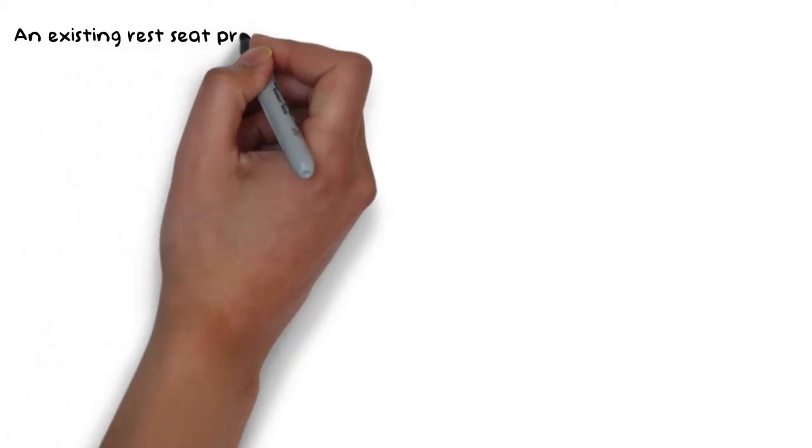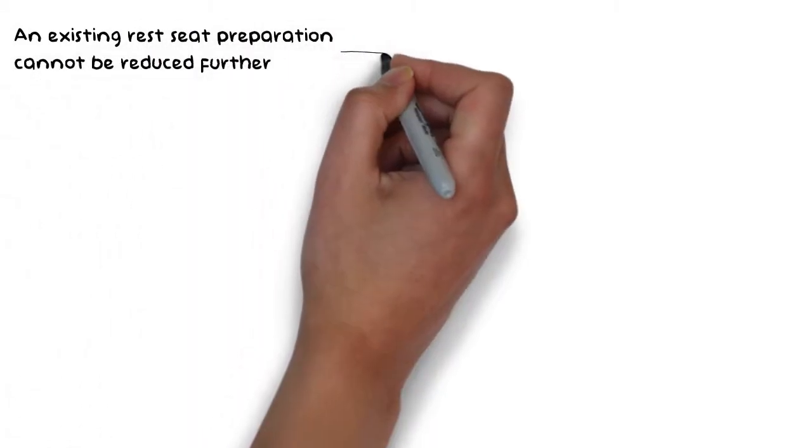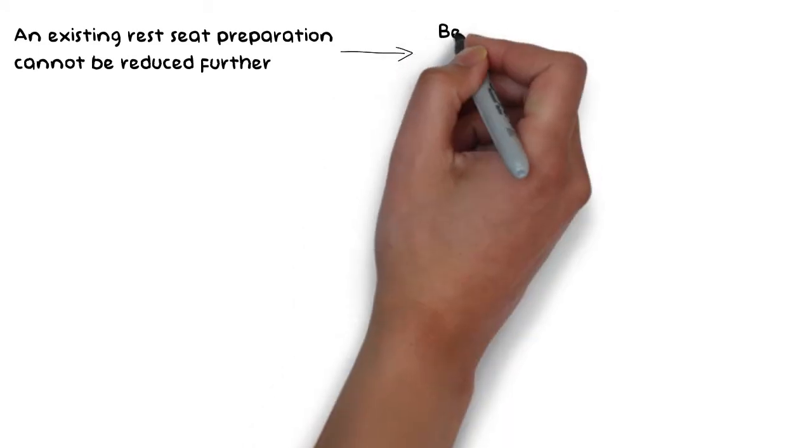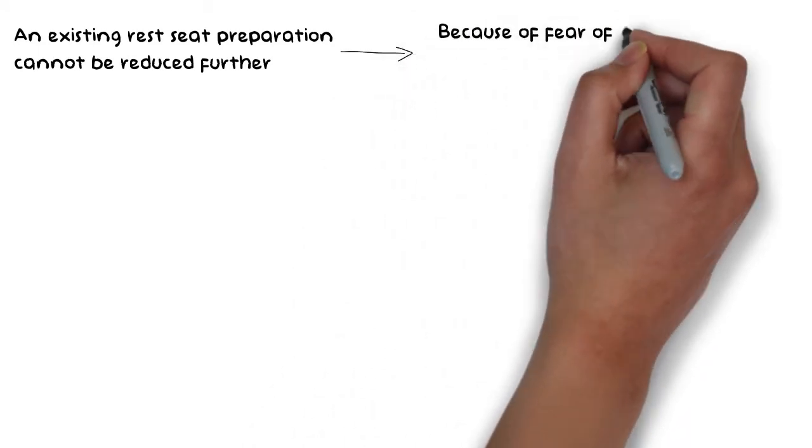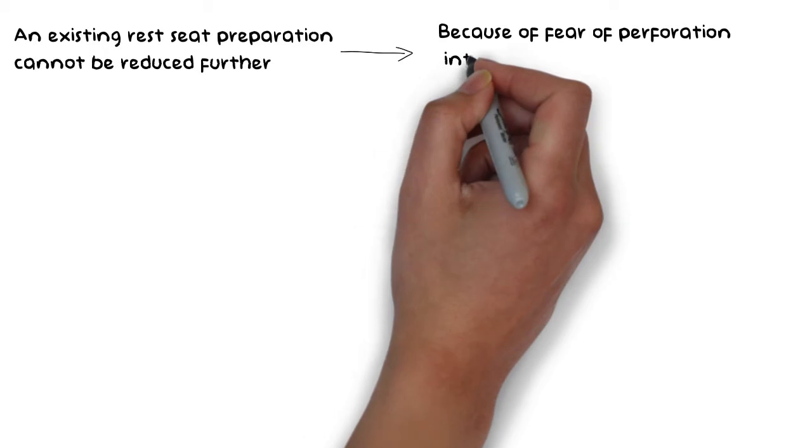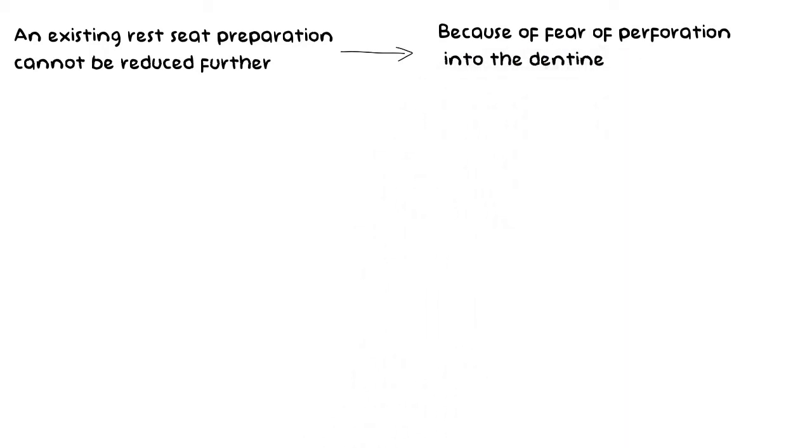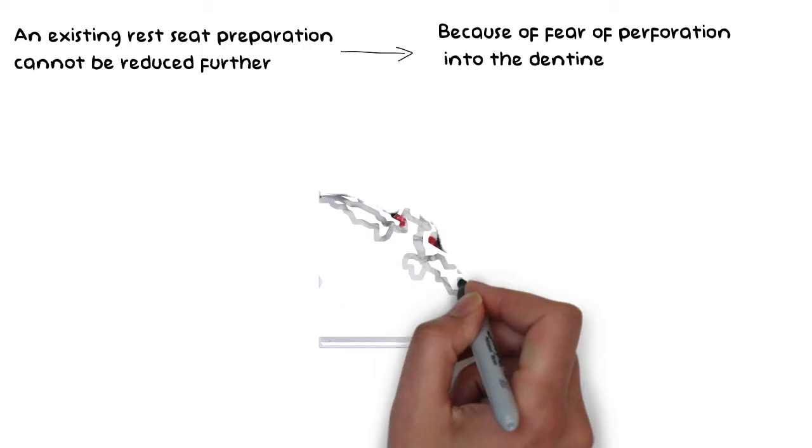But sometimes an existing rest seat preparation cannot be reduced further to make it tapering apically, because there may be a high probability of perforating the enamel and going into the dentine. As I have said in my previous video, rest should always be located on the enamel so as to keep the tooth structure caries-free and healthy. If there is a fear that further reducing the marginal ridge may cause a breach in the enamel, then a secondary occlusal rest can be used.